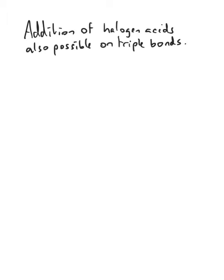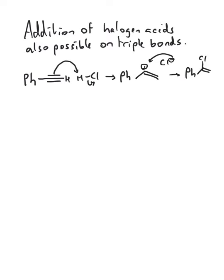Finally, the addition of halogen acids is also possible on triple bonds. The mechanism is just the same, except in this case, after one addition, we still end up with a double bond.